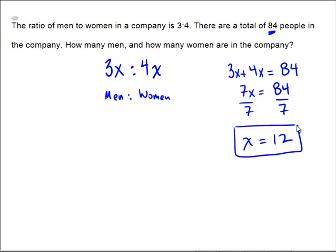That's just the value of x. Now, remember there were 3x many men and 4x many women. So we have 3 times x, which is 12, many men. 4 times x, which is 12, many women. So 36 and 48.